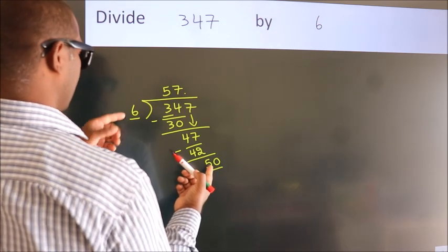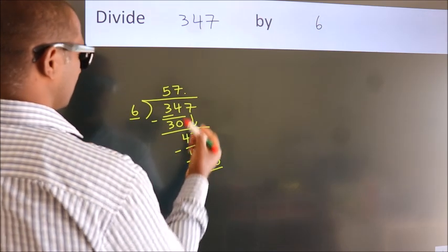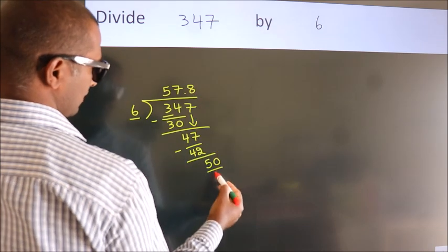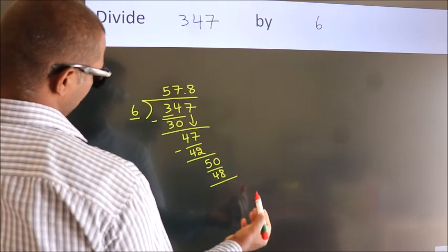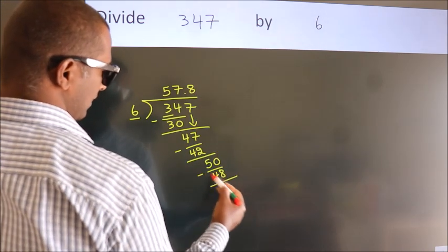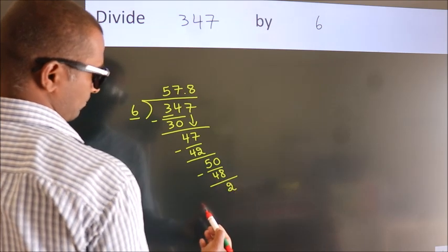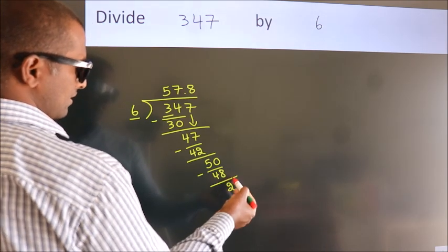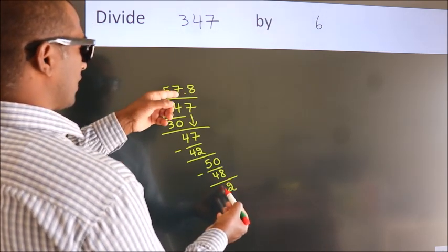A number close to 50 in the sixth table is 6 eights, 48. Now we subtract. We get 2. After this, we already have the decimal.